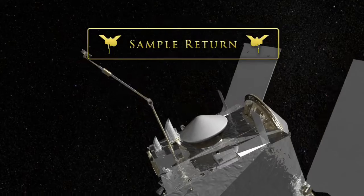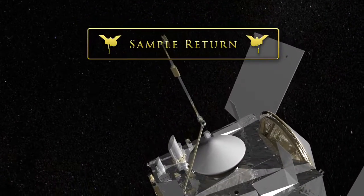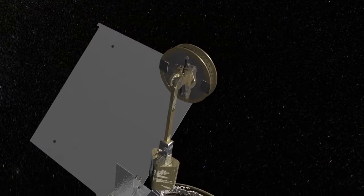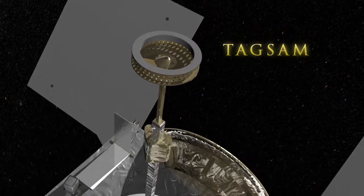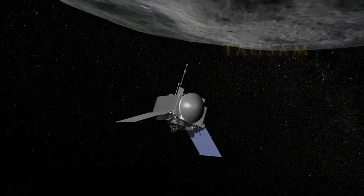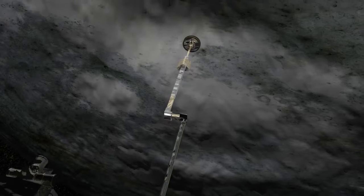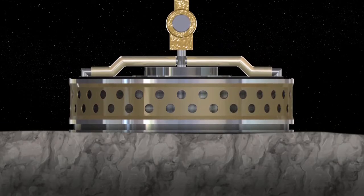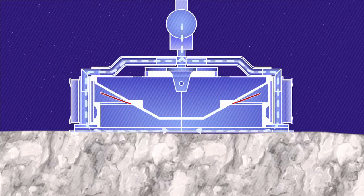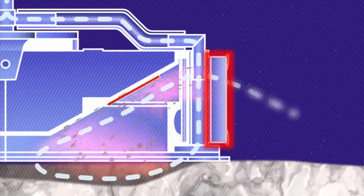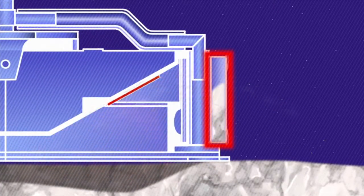Retrieving a sample of the asteroid for study on Earth. In 2019, OSIRIS-REx will deploy its Touch-and-Go Sample Acquisition Mechanism, or TAGSAM, and slowly approach the sample site. When the TAGSAM touches the surface, it will release a burst of nitrogen gas, causing loose rocks and soil to flow into the collector.